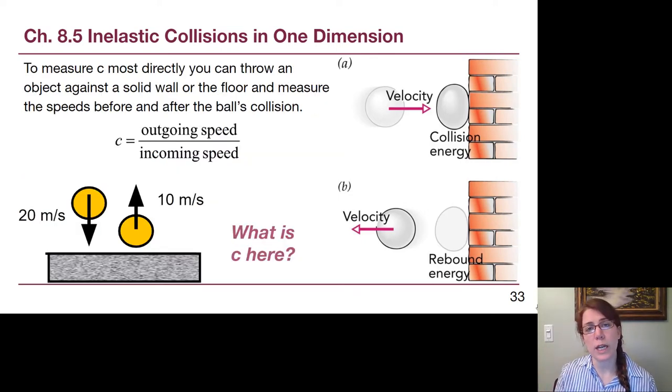The simplest way that we can measure this is to throw an object against a wall or floor, and measure the speed before and after the collision. So in this particular simple setup, the ball is heading downwards at 20 meters per second, it bounces back up at 10 meters per second, the outgoing speed is 10, the incoming speed is 20, and so the c value is 10 divided by 20, or 0.5, basically right in between perfectly elastic and completely sticking together. And what we'll find is that base balls tend to be about in that halfway in between place.